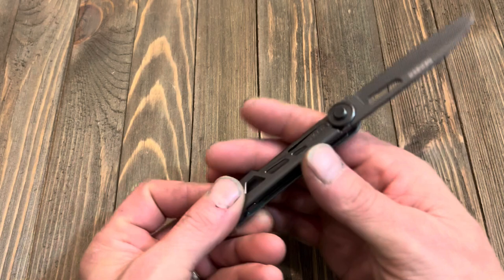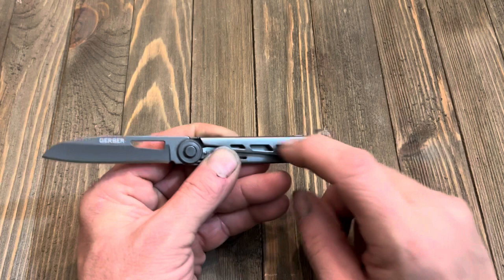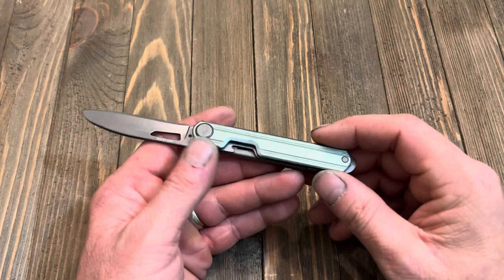It feels good for something that doesn't have any type of indentations or any weird shapes in the blade or in the handles to hold. It works really well. The scales are very smooth. Aluminum scales on that side, stainless steel on this side. It's got what they call Baltic haze green finish.